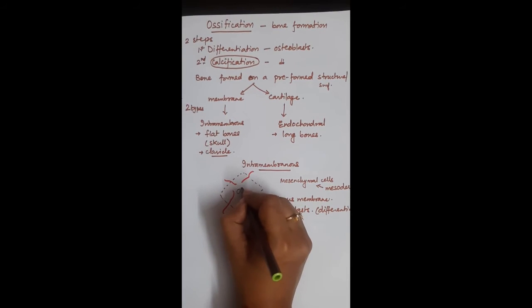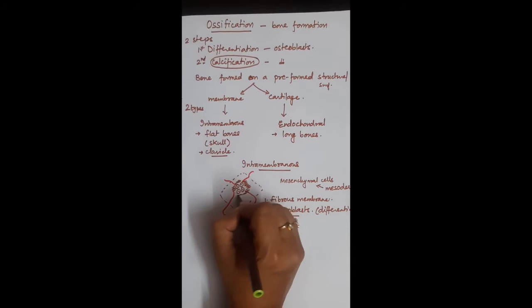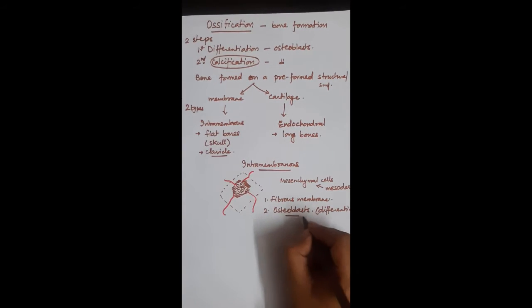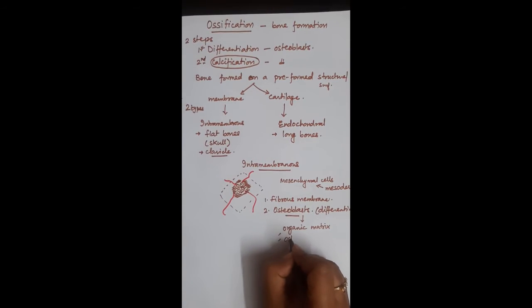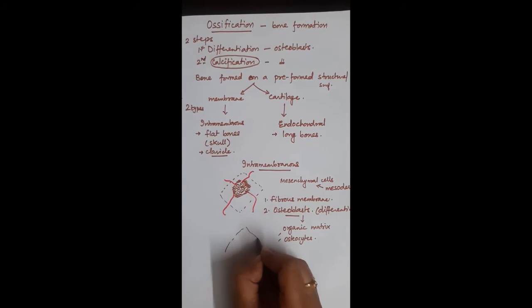In the center of this membrane the mesenchymal cells start differentiating into osteoblast cells. These osteoblast cells then start secreting the organic matrix around them and also differentiate into osteocytes. Next when we see it, the osteoblast cells have reached the periphery of this developing bone tissue. The inside has become organic matrix, the ossification has started, and the osteocytes are now present inside within their lacunae.